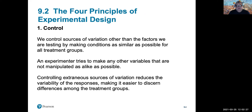The first basic principle of experimental design is control. You create conditions around the experiment that control variations in factors other than the ones being measured by the experiment.